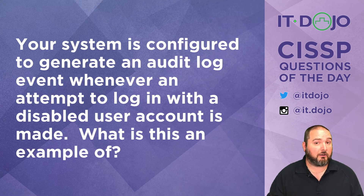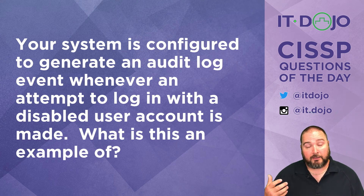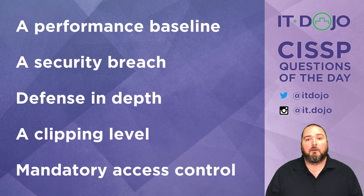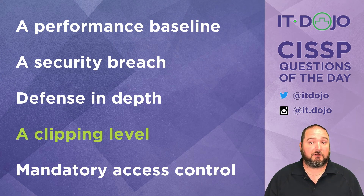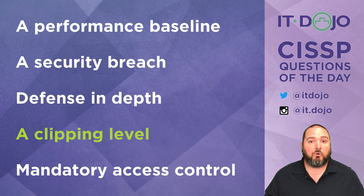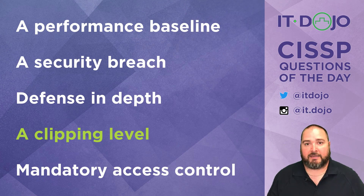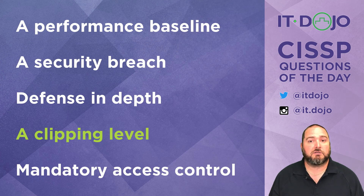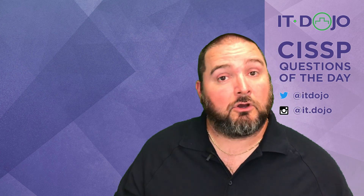Question number two: you've configured your system to generate an audit log event any time an attempt to log in with a disabled user account is made. What is that an example of? The correct answer is a clipping level. A clipping level is the term used to describe the threshold at which you audit — what has to happen for you to say 'I'm writing that down.' In this case, someone trying to log in with a disabled user account achieves your threshold — that is your clipping level.